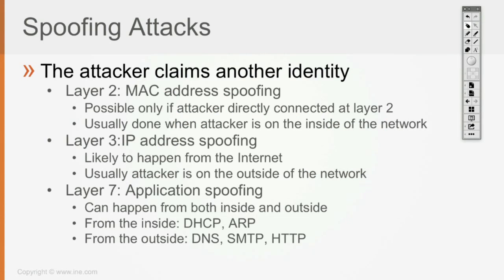We also have layer 4 spoofing and layer 7 application spoofing. Application spoofing can happen from both inside and outside the network. From the inside, somebody can spoof the DHCP server to deplete the DHCP pool of IP addresses, or it can be an ARP attack. The OSI layer of the application attack depends on which layer the protocol runs — DHCP, for instance, is not a layer 7 protocol but operates at the layer 4 TCP/IP stack level. So an application attack can span OSI layers 2, 3, 4, or 7 depending on the protocol being exploited.